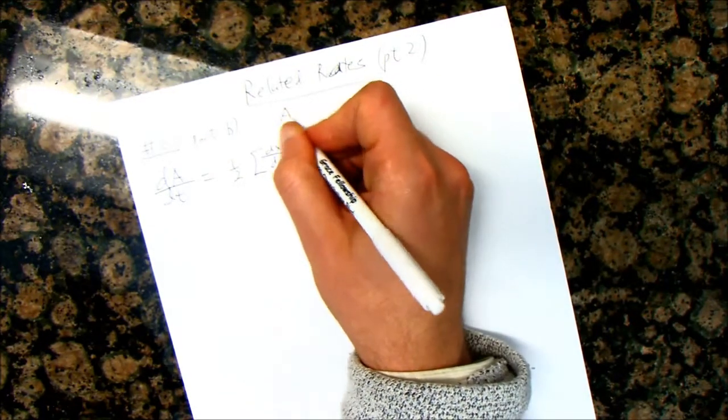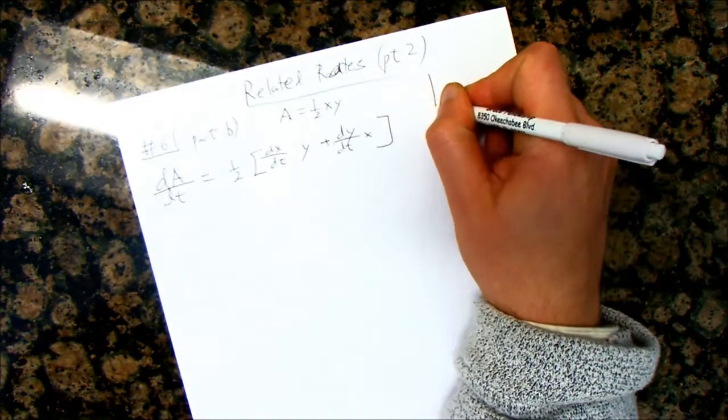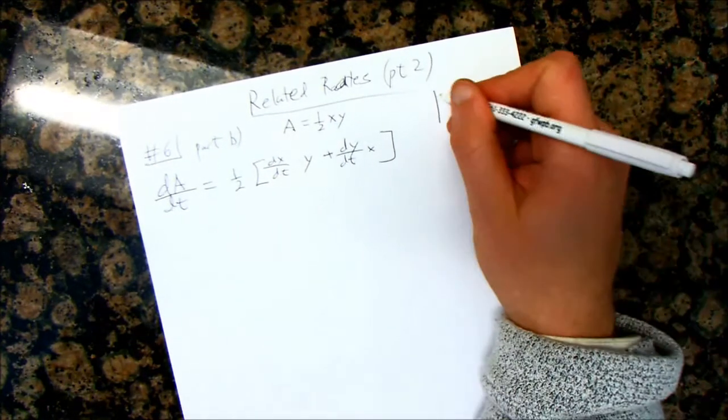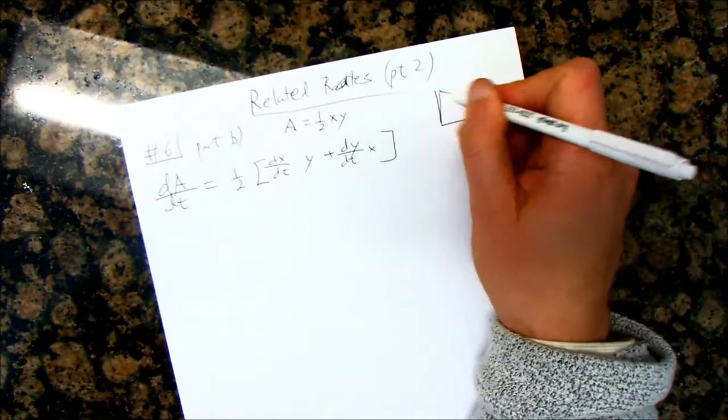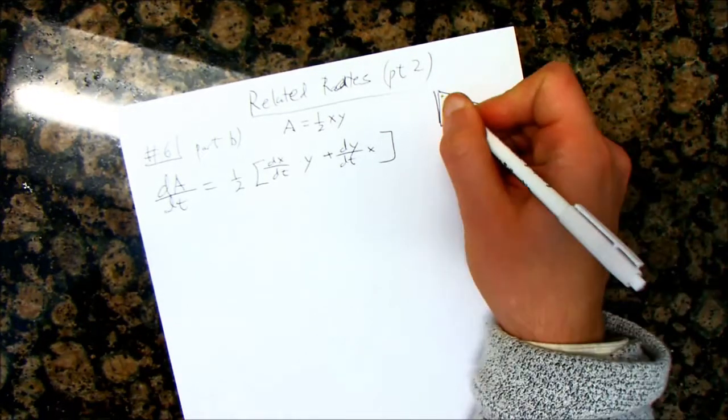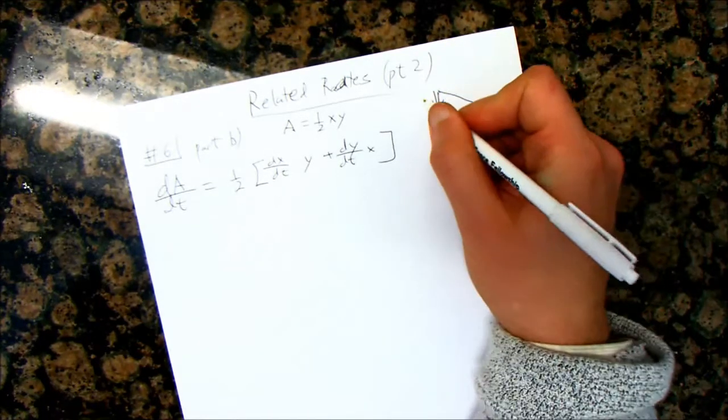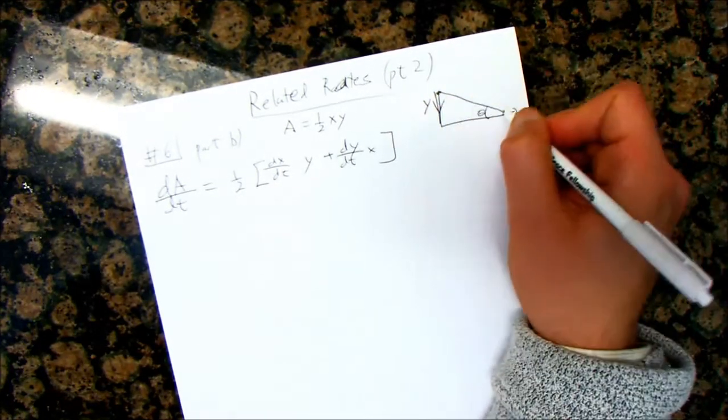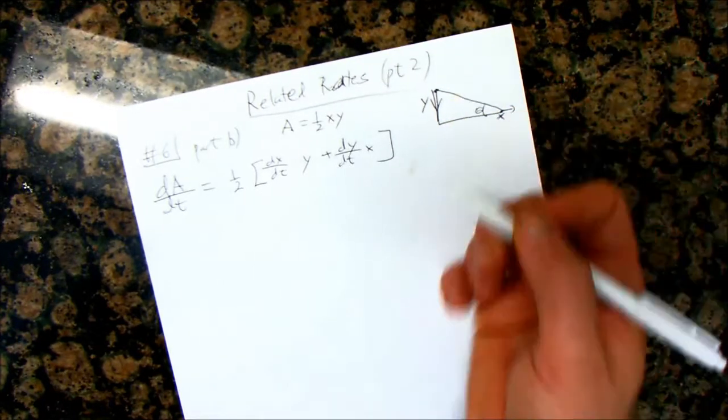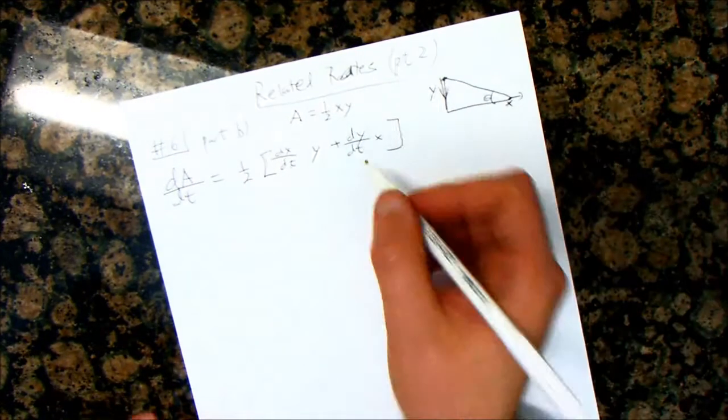So first of all, we had to write that A was equal to 1/2 times xy, right? 1/2 base times height, and we had a triangle. We have a triangle, and it's a ladder. It's supposed to represent a ladder that's sliding off a wall, so the base is going this way, the height is going this way.